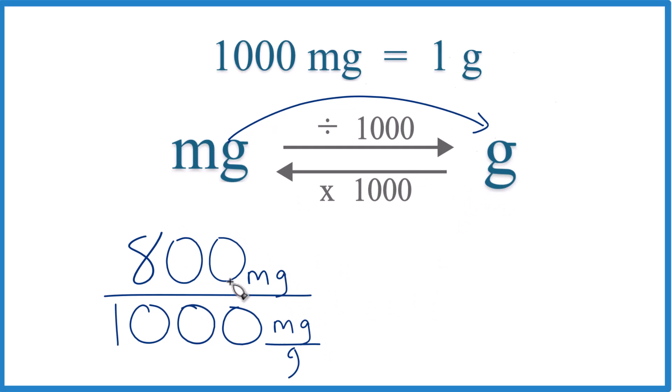But look at the units: we have 800 milligrams, that's what we're given, and in the denominator we have 1000 milligrams per gram. So this is our conversion factor—milligrams on the top and bottom cancel out, and we're left with grams. That's what we're looking for.